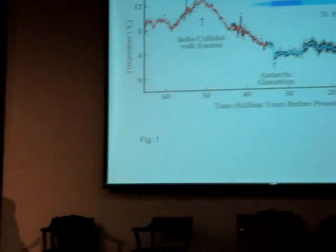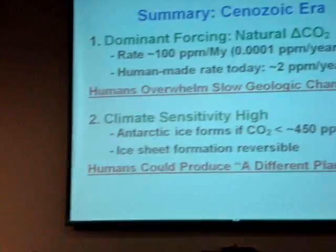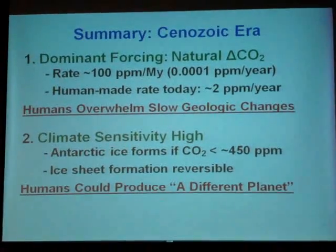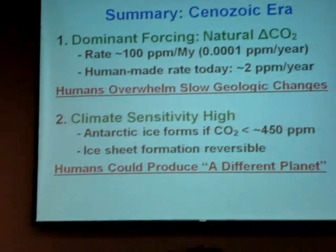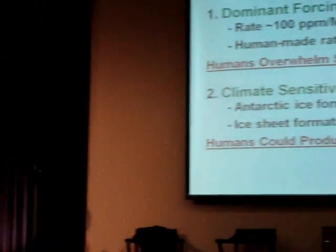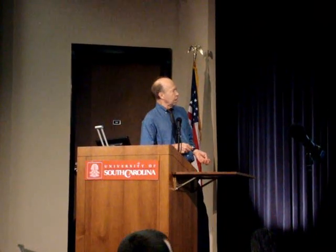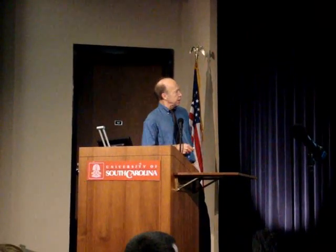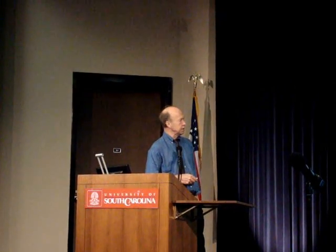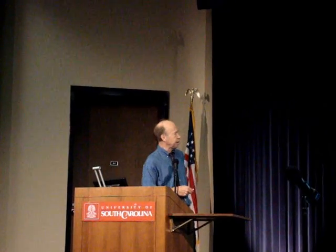There are two interesting things about this. If you look at the rates of these processes, the difference between the source and the sink is typically one ten-thousandth of a part per million. But over a million years, that's a big change — about 100 ppm of CO2, which is a big forcing. But the human-made rate of change is two ppm per year, so we're more than ten-thousand times more powerful than the natural rate of change.